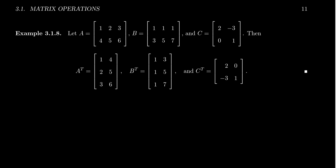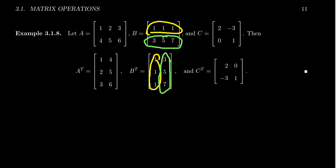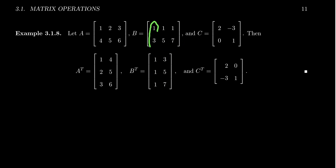We do the same thing for B. B is likewise a 2 by 3 matrix, so its transpose will be 3 by 2. We take the first row of B — that becomes the first column of B transpose. We take the second row of B, and that becomes the second column of B transpose. Or if you prefer, we take the first column of B — that's the first row of B transpose. We take the second column of B, that becomes the second row of B transpose. And we take the third column of B, and that becomes the third row of B transpose.